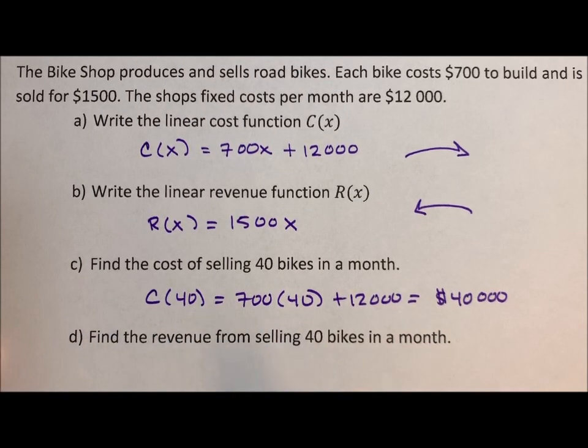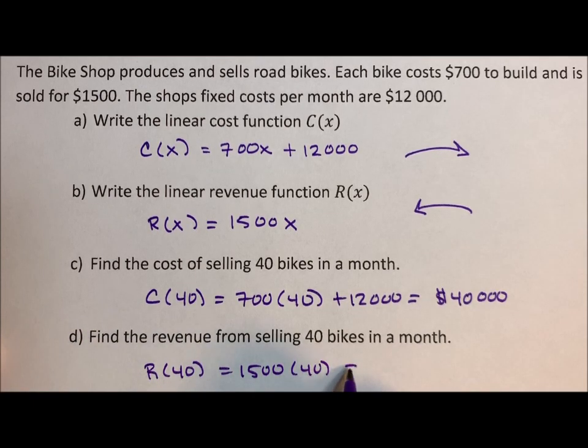The revenue of selling 40 bikes. Well, the revenue of 40 bikes is $1,500 times 40. And the revenue of 40 bikes is $60,000.